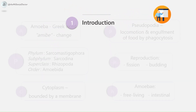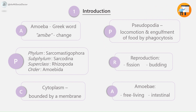First, introduction to the parasite. The word amoeba is derived from the Greek word 'amoebae', meaning change. Amoebae are structurally simple protozoans which have no fixed shape. They are classified under phylum Sarcomastigophora, subphylum Sarcodina, superclass Rhizopoda, and the order Amoebida.